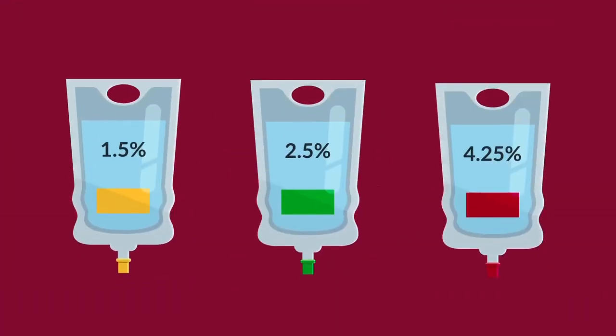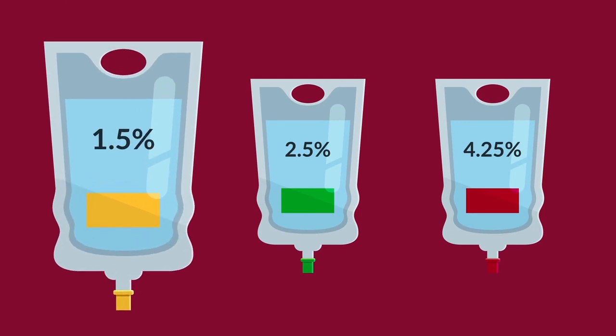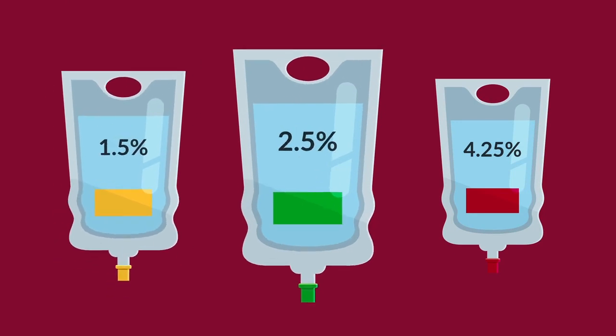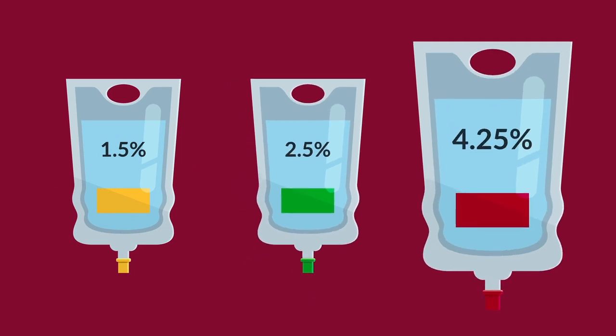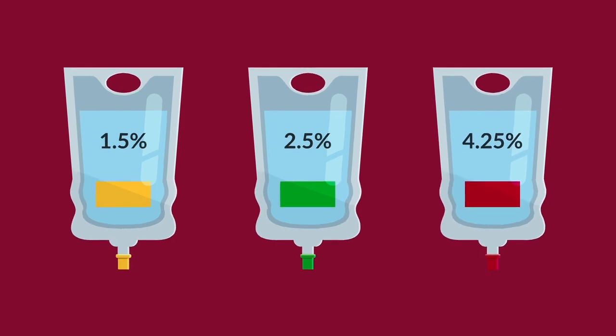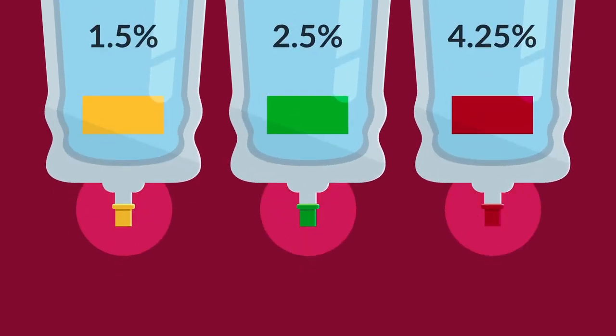PD solution contains a kind of sugar called dextrose. It comes in three different strengths: 1.5% or low strength, 2.5% or regular strength, and 4.25% or high strength. These solution bags are color coded to make it easy to pick the right one.